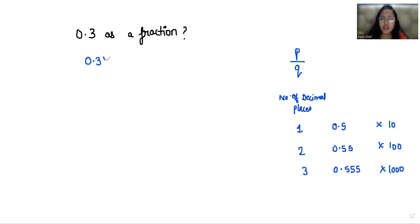Now there is 1 digit after decimal then you have to multiply by 10. But you have to multiply by 10 in numerator as well as in denominator. So 0.3 times 10 gives you 3 and 1 times 10 gives you 10. So 0.3 in fraction form is 3 by 10.